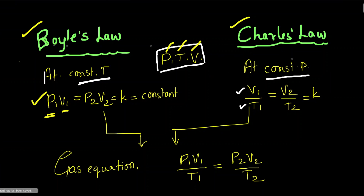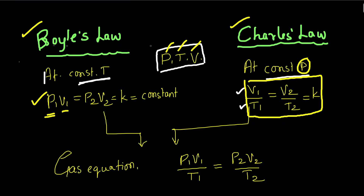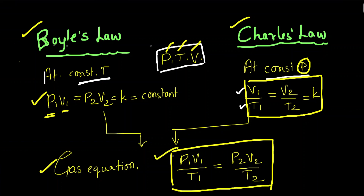Then Charles kept pressure constant and studied what happens to volume when you change the temperature. He arrived at the equation V1/T1 = V2/T2 = V3/T3, which is constant. Finally, you arrive at the combined gas equation by combining Boyle's law and Charles' law: P1V1/T1 = P2V2/T2.